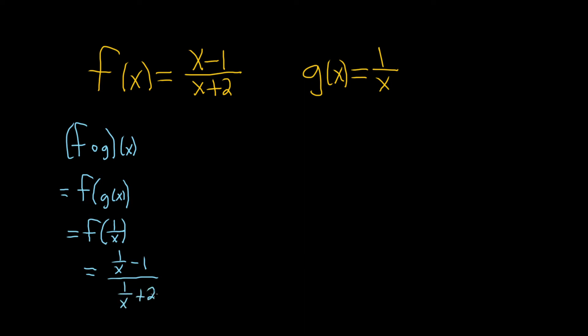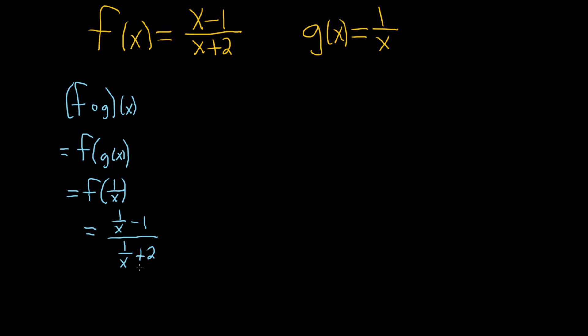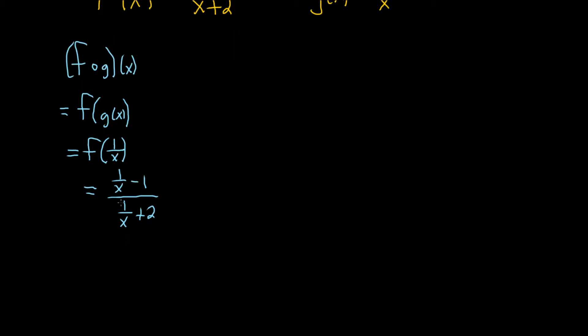And there's a really clever way to simplify this. It'd be really nice to not leave these fractions in the numerator and the denominator. So what we can do is we can multiply by 1 in a clever way. So I'm going to put a times here, and we'll multiply by x over x. This is really cool. So basically multiplying by 1.